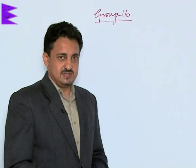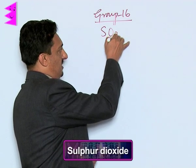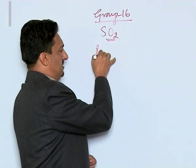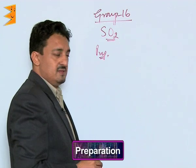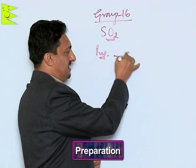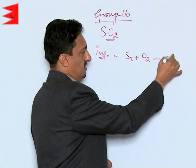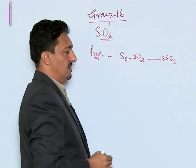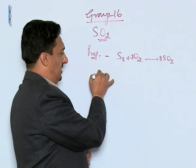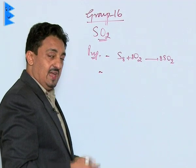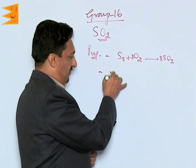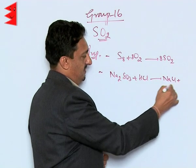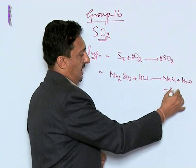The next compound of Group 16 to discuss is Sulphur Dioxide (SO2). It can be prepared by heating Sulphur with oxygen, which forms SO2 along with a small amount of SO3. It can also be prepared by treating a sulphur salt with HCl — for example, sodium sulphite with HCl gives NaCl, H2O, and SO2.